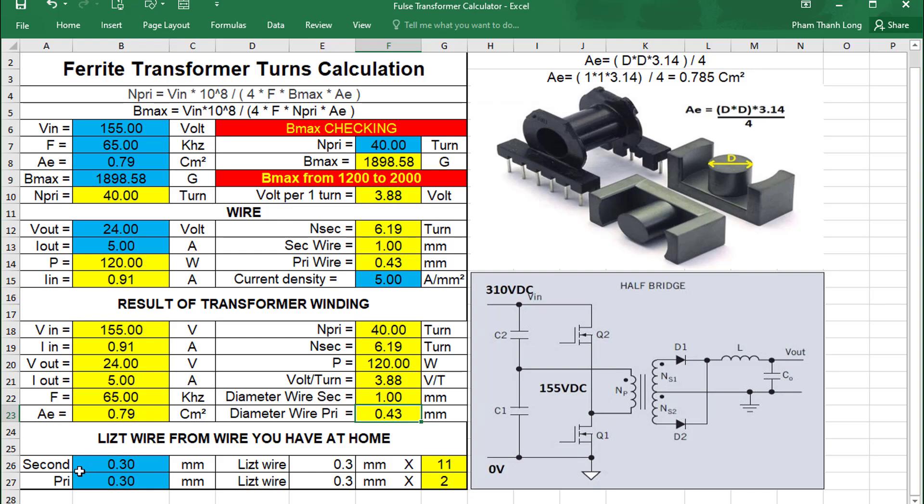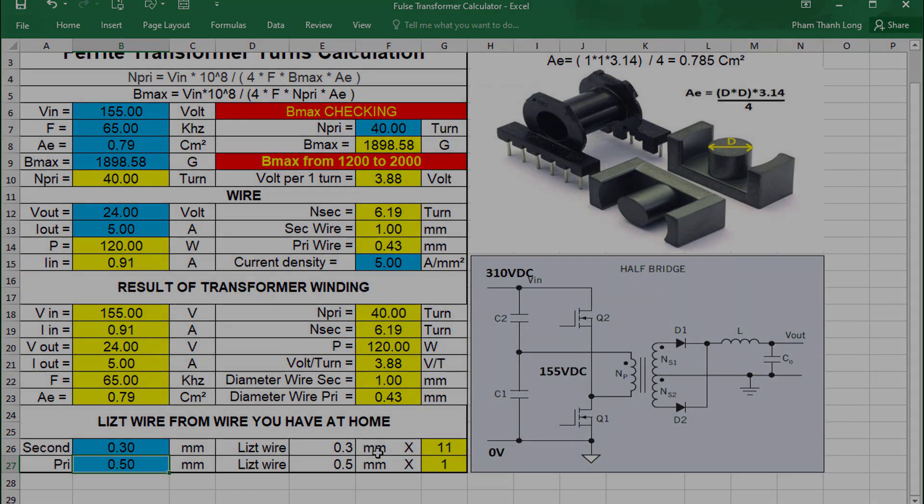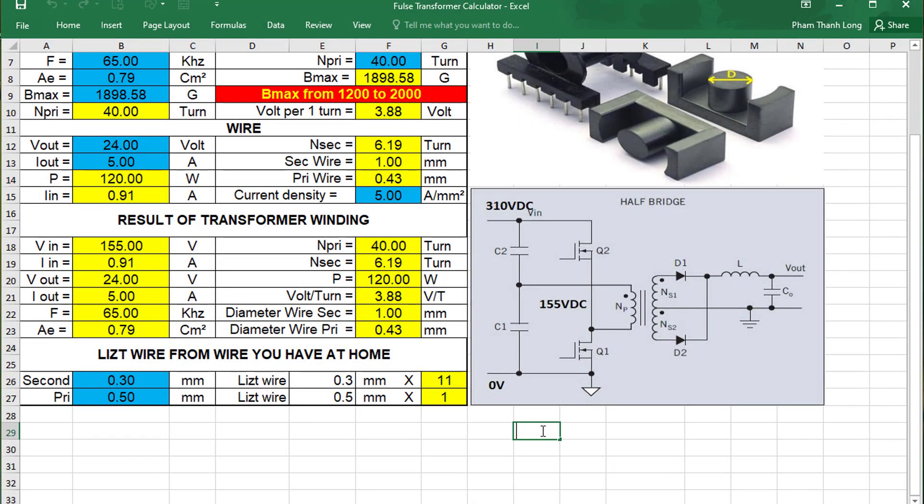Sometimes we will not have wire with the calculated diameter. Don't worry, I'll help you analyze wire from the wires you already have at home. Just enter the wire diameter that you currently have. The program will calculate for you. Here, I only have wires with diameter 0.3 millimeters and 0.5 millimeters. And this is the result after we calculate and choose the wire diameter.